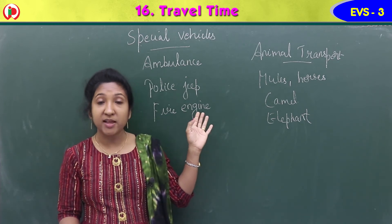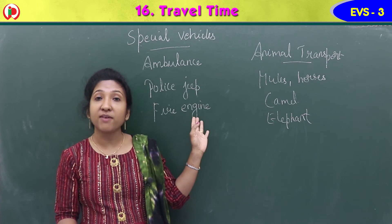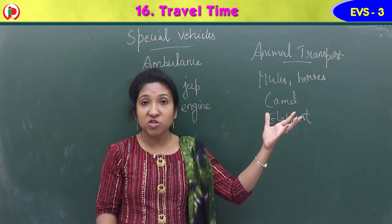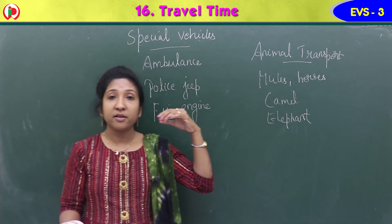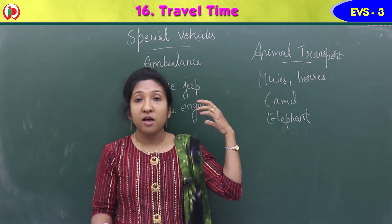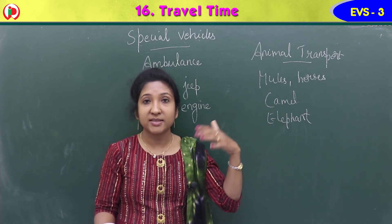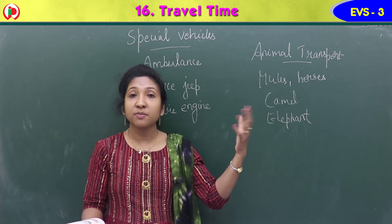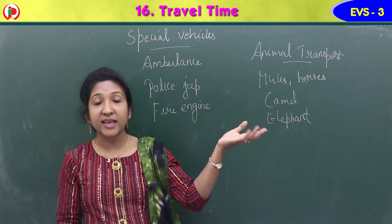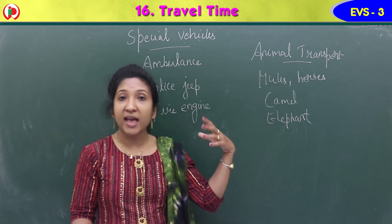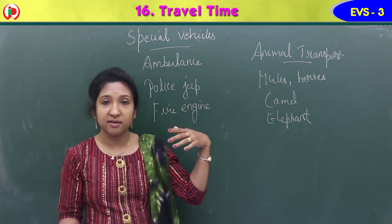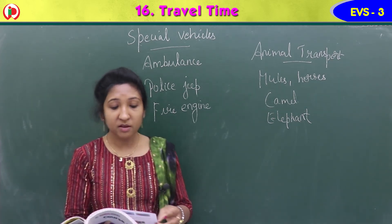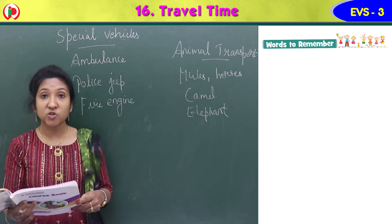Special vehicles include the ambulance, police jeep, and fire engine. When there is an accident, the ambulance rushes to the spot to take the injured person to the hospital. If a building catches fire, the fire engine comes and puts it out using water. Police jeeps help control traffic and protect society. Animals also carry goods and people — camels in deserts, mules and horses in hilly areas, and elephants in forest areas.